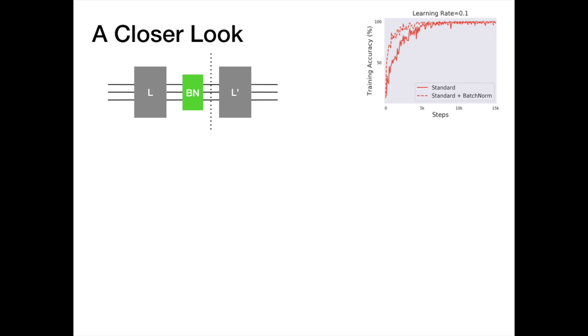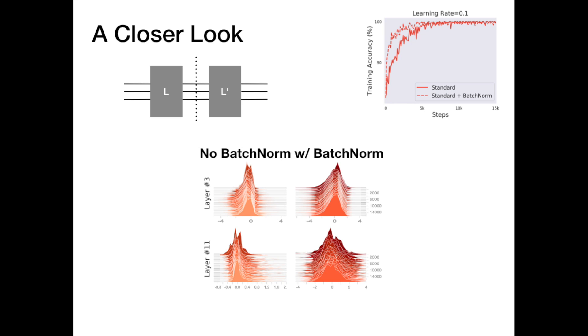So what does internal covariate shift look like in practice? In networks with batch norm, distributions look pretty good, as we'd expect. But when we remove the batch norm layer, the distributions... well actually they don't really look all that unstable either.